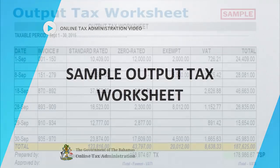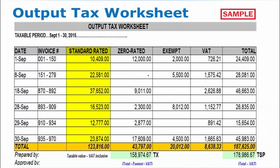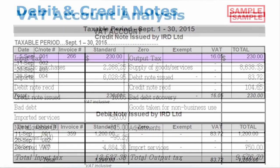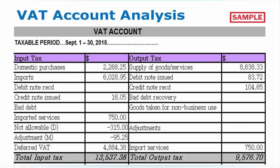This worksheet features a summary of standard rated, zero rated, and exempt sales, the amount of VAT charged, and the total for each day. Any adjustments such as debit and credit notes or errors should also be taken into consideration. These totals should be transferred to the VAT account under the output tax column.